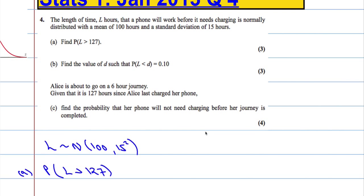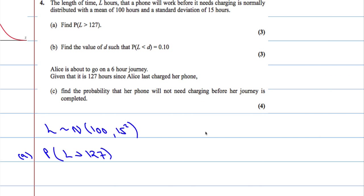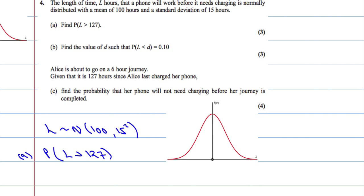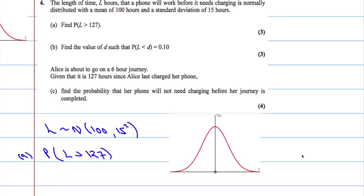The first thing we should always do when dealing with normal distribution questions is draw the diagram — I cannot stress how much easier it makes the question. We know that the mean is 100, and we're talking about 127, which is over to the right. We're asked to find the probability it's greater than 127, so we want the area beneath the curve to the right of 127.